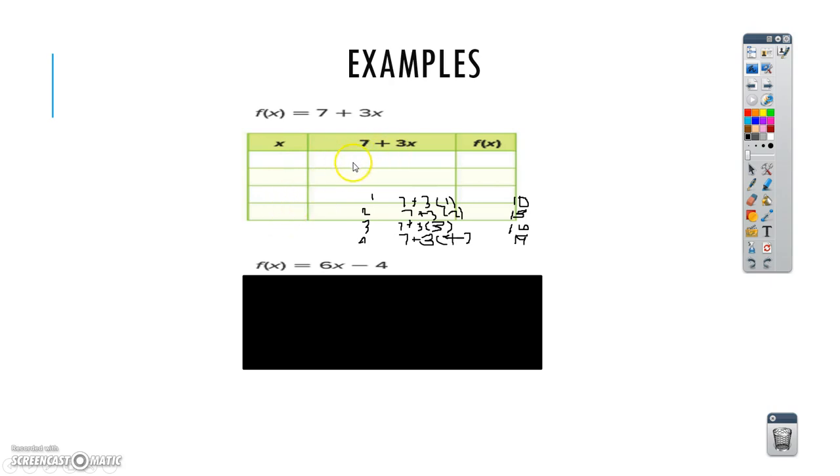And for the second one, you would plug in 1 for X for the first one, 2 for X for the second one, because that's how we did it. And then it would be 7 plus 3 times 1. So, 7 plus 3 equals 10, and times 1 doesn't really do anything.